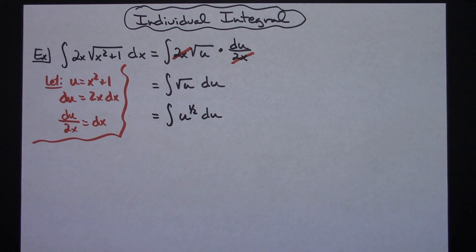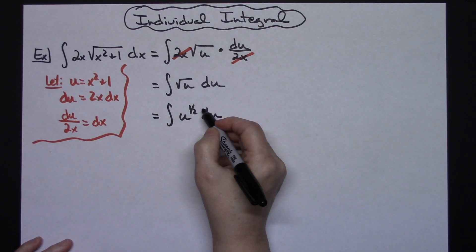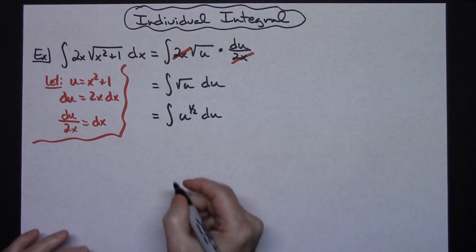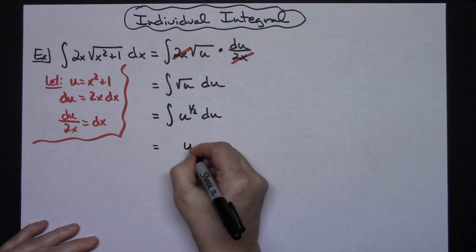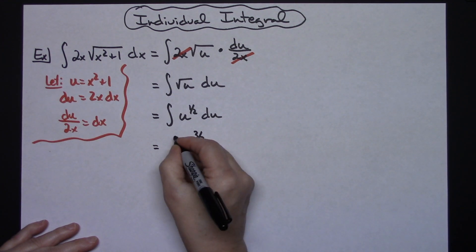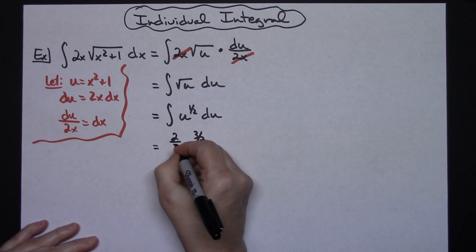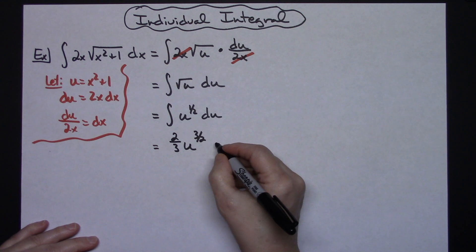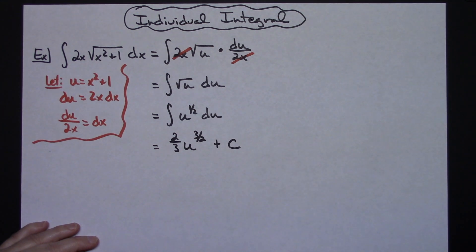Now we're to the place where we can integrate this. I'm going to add 1 to that 1 half, that's going to give me 3 halves. So u to the 3 halves, and then with the reciprocal in front I'll have 2 thirds. I am done integrating so now I can put in my plus C.